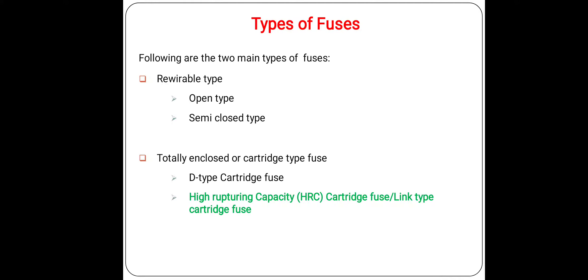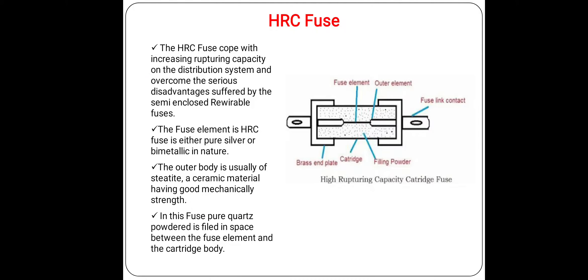The second type is the totally enclosed or cartridge type fuse, where the fuse element is enclosed in a totally enclosed container with metal contacts on both sides. This type is further of two types: D-type cartridge and link-type cartridge fuse. The link-type cartridge fuse is also known as HRC fuse, meaning high rupturing capacity fuse, which is today's topic.